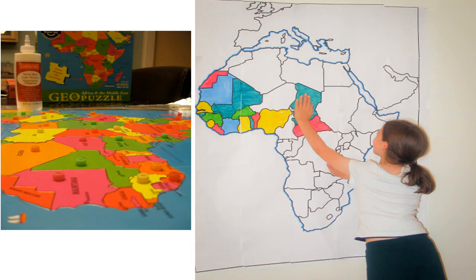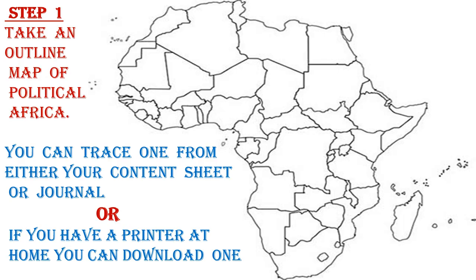Step one: you have to take an outline map of political Africa. Remember, since you are not stepping out of the house, you will have to trace the map from the one you have in your journal, one of your content sheets, your textbook, or if you have a printer at home, you can download and print one.